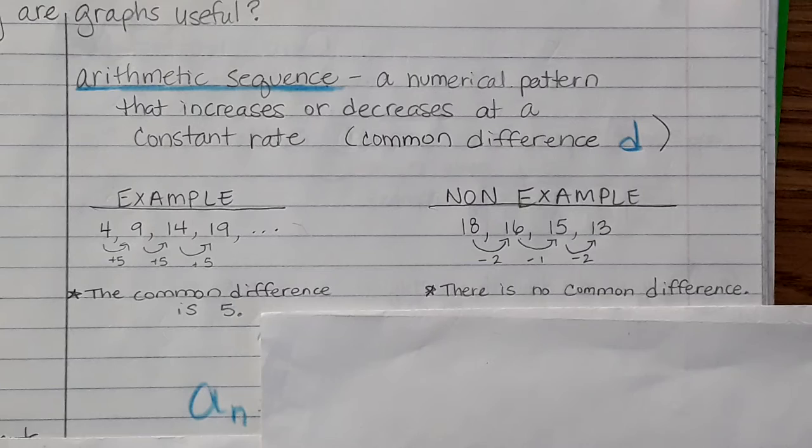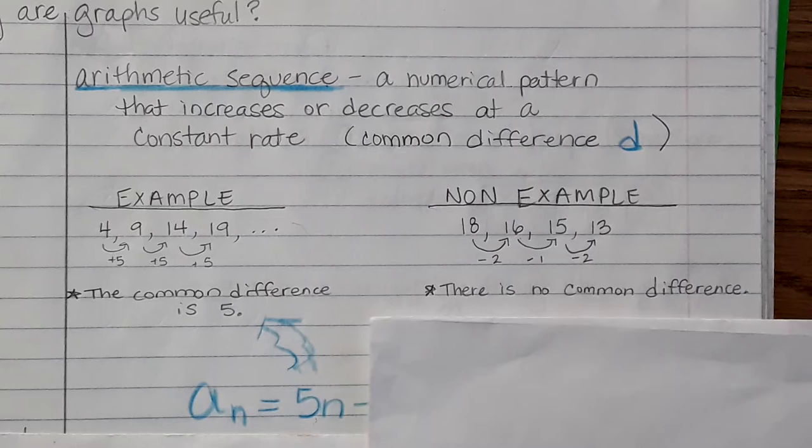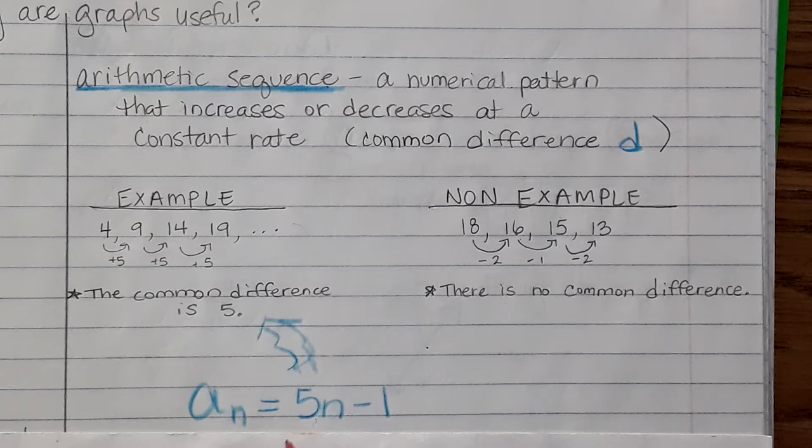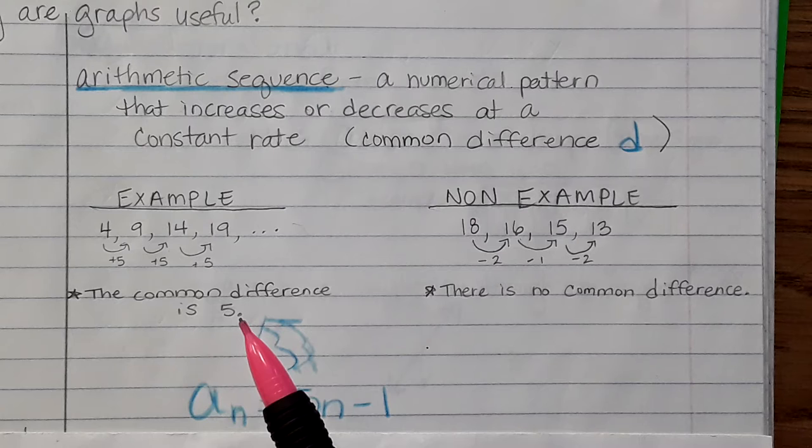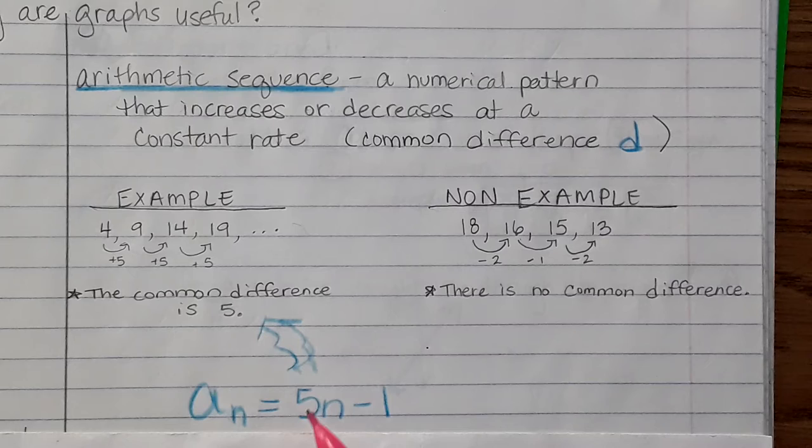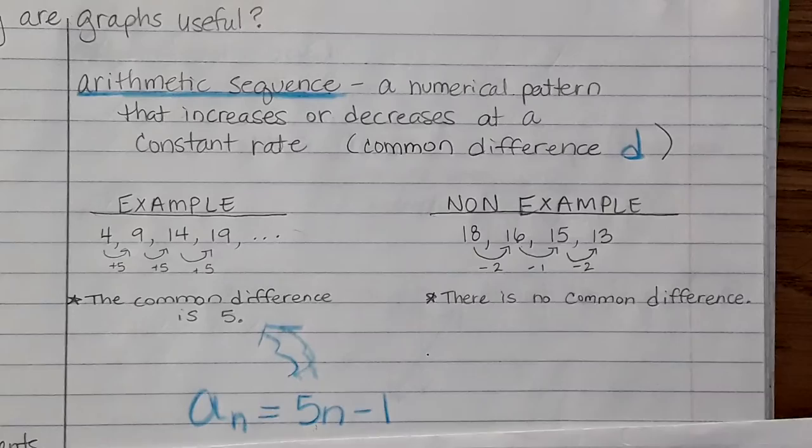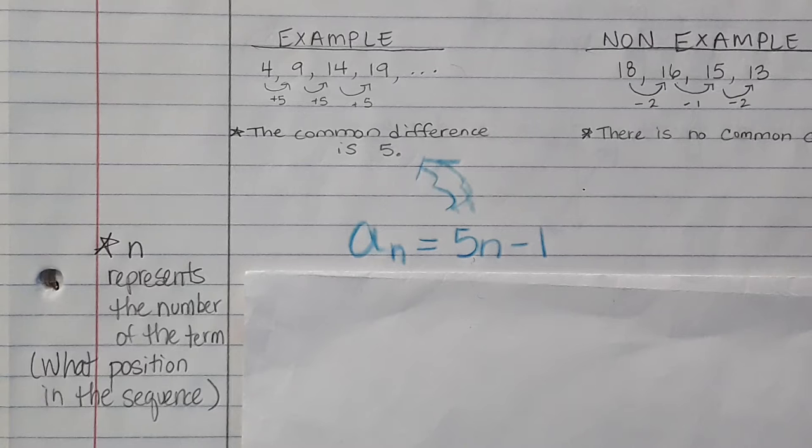The equation for this example here is a sub n equals 5n minus 1. So, where did this information come from? This 5, the coefficient of n, is the common difference. Whatever your common difference is, that's going to go right here, the coefficient of n. What is n? n represents the number of the term or the position in the sequence.